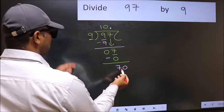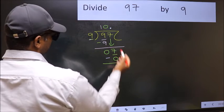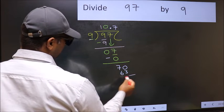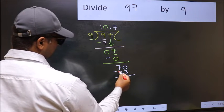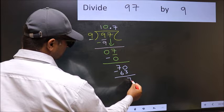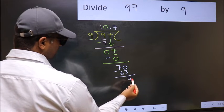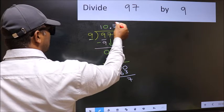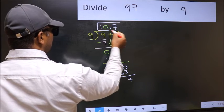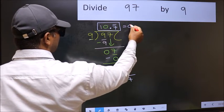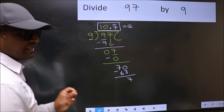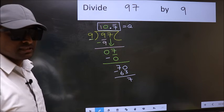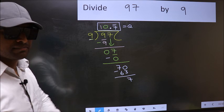70 — a number close to 70 in the 9 table is 9 sevens, 63. Now subtract and you get 7. We got 7 again. That means we get a bar on this number — it is a recurring decimal. So this is our quotient. Did you understand where the mistake happens? You should not do that mistake.